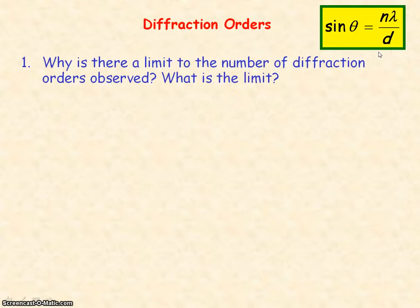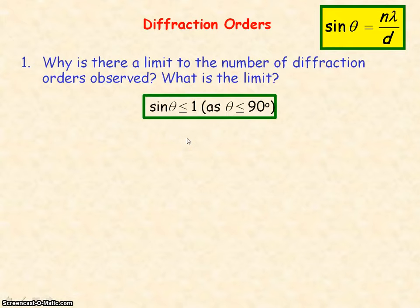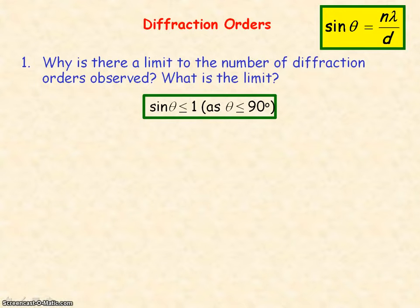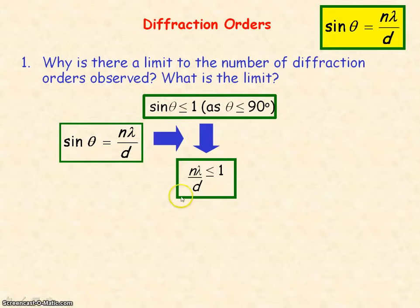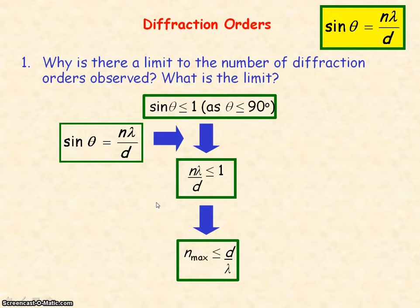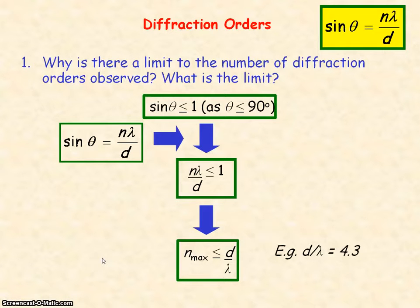According to this equation, there will be a limit to the number of diffraction orders observed. That's because sine theta cannot be greater than one, so the angle theta cannot be greater than 90 degrees. Theta over 90 degrees would mean the light waves have been reflected back off the slits, which is impossible. So if sine theta cannot be greater than one, then n lambda divided by d cannot be greater than one, meaning the maximum value of n has to be less than or equal to d divided by lambda. For example, if d divided by lambda equals 4.3, then since n has to be a whole number, the maximum diffraction order observed is 4.